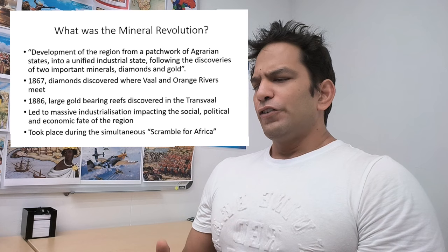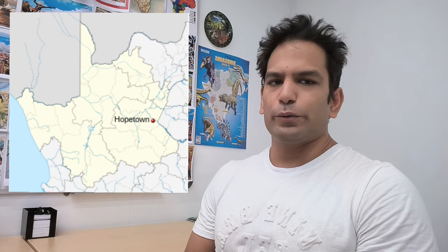In 1867, diamonds were discovered where the Vaal and Orange Rivers meet. In what was rural farmland near a town called Hopetown, there was a farm called De Kalk owned by the Jacobs family. In 1866, a young boy named Erasmus Jacobs was playing — he collected a stone to play with his sister. They would play a game called Five Stones. The former owner of the farm, Schalk van Niekerk, was visiting and saw the two kids playing with this shiny stone, and he realized it was a diamond.